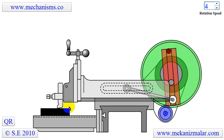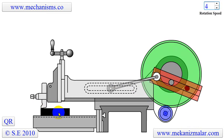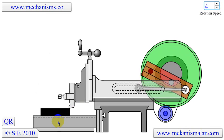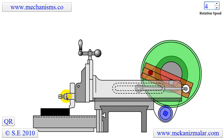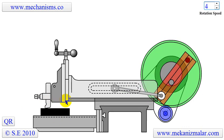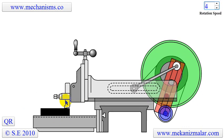At the same time, another mechanism, not shown in this animation, slightly moves the toolbed perpendicularly to the ram direction. This movement allows the workpiece to be fed for the next cutting stroke.